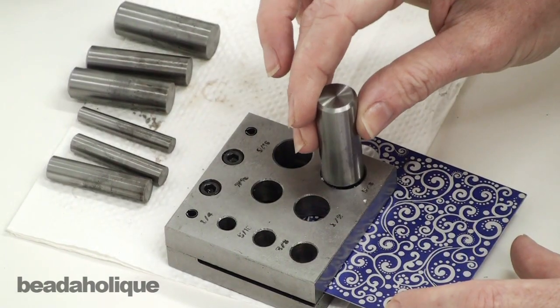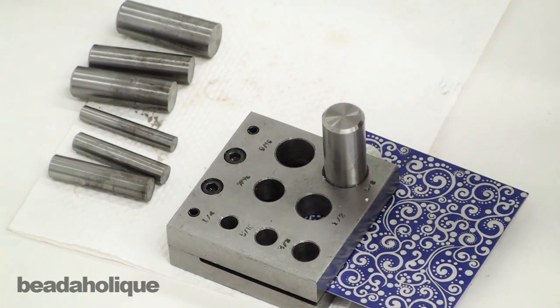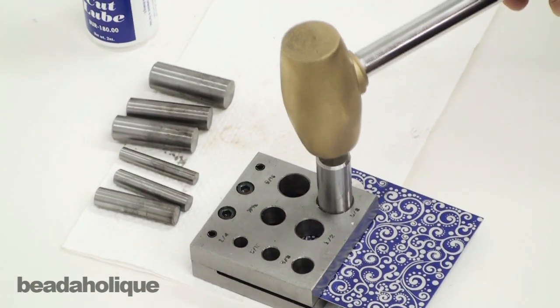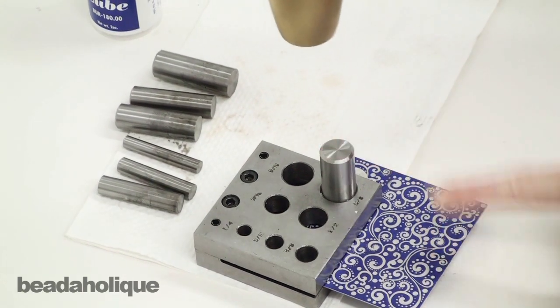We're going to put our cutter into the hole and I've got a one pound brass mallet and I'm going to do one clean strong strike and push this cutter all the way through.